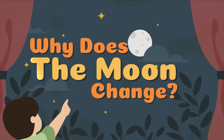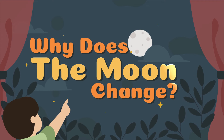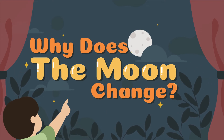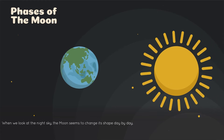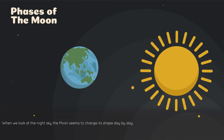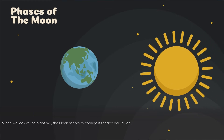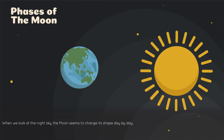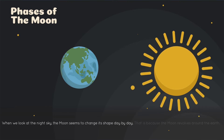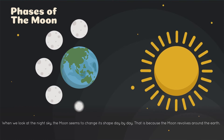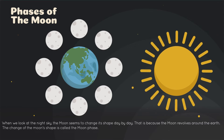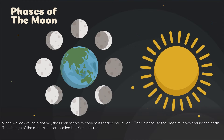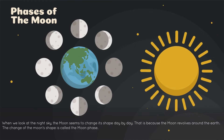Why does the moon change? When we look at the night sky, the moon seems to change its shape day by day. Because the moon revolves around the earth, the change of the moon's shape is called the moon phase.